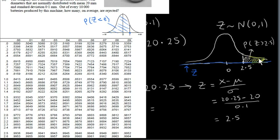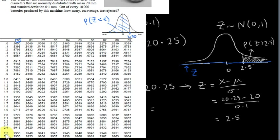We're interested in the area to the right of 2.5, but these tables give the area to the left. So we start by getting the area to the left of 2.5. We read 2.5 by going down the column for the first decimal place and across the top row for the second decimal place. Our value to two decimal places is 2.50. Going down to 2.5 and reading under zero, the area to the left of 2.50 is 0.9938.